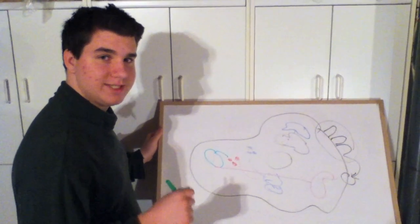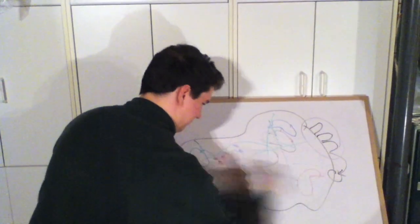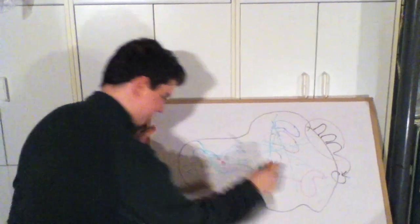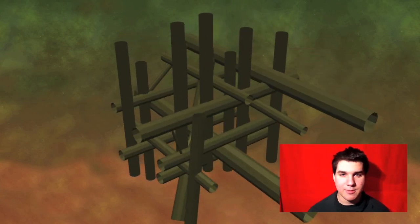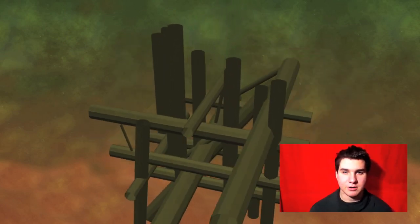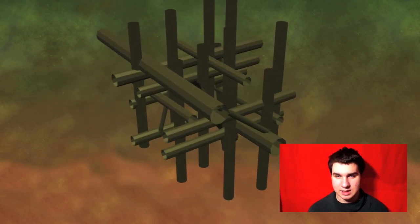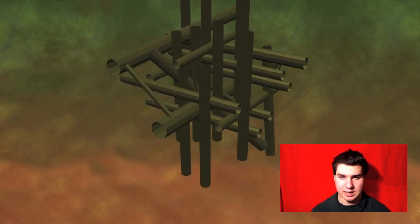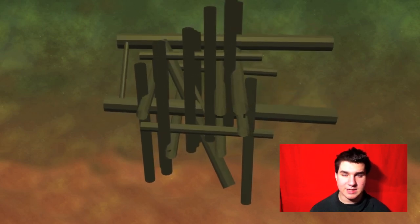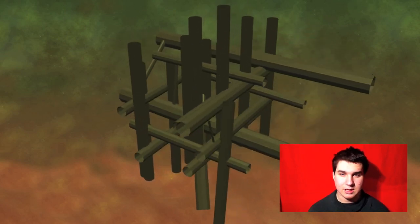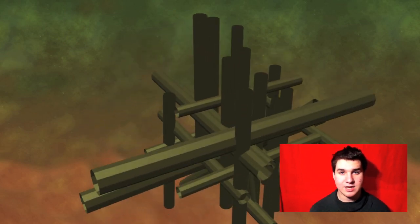Finally, we come to the cytoskeleton. The cytoskeleton is a network of centrioles and microtubules that crisscross throughout the cytoplasm — the jelly-like substance that lies between the organelles. The cytoskeleton is responsible for maintaining the cell's shape and assisting it in movement and division.